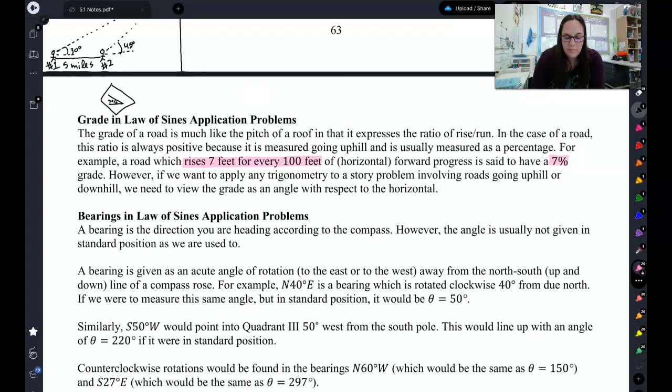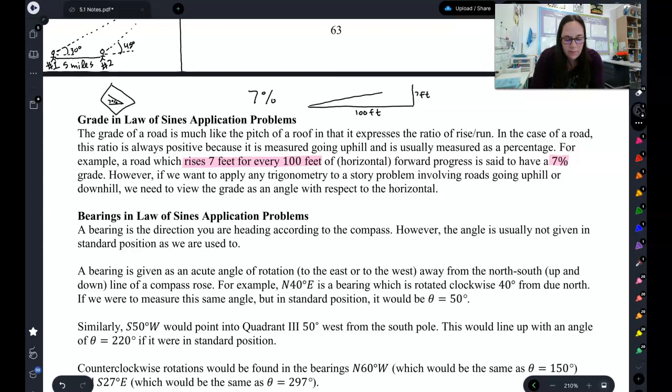So if you see a 7% grade, that means we go 100 feet over, and then we go 7 feet up. Then here's our road. So if you see any problems about grading of a road, that's what that means when you see that percent.